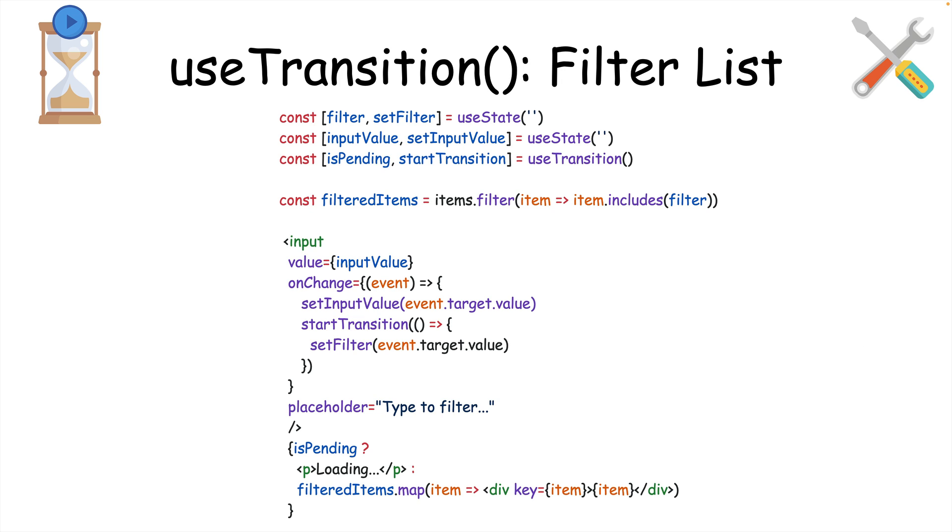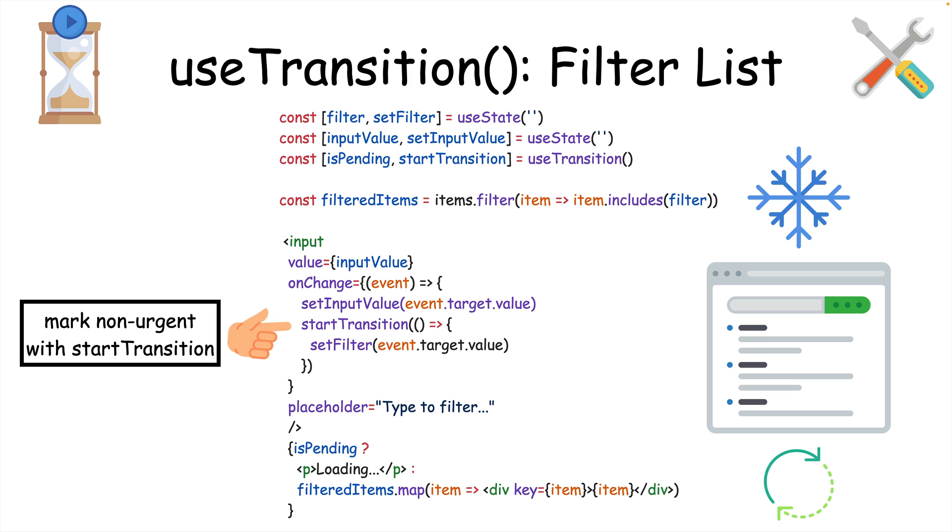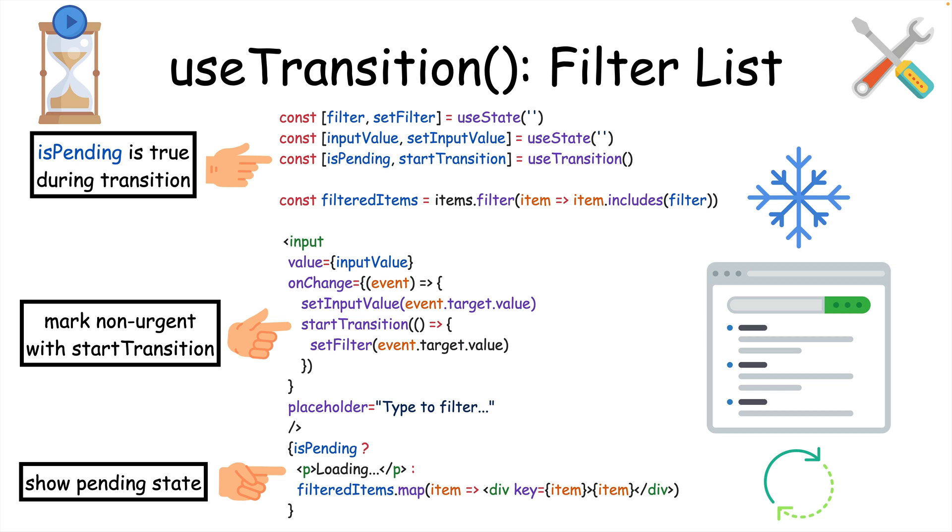A great use case for useTransition is filtering a list based on user input. Typing into the input might cause the UI to freeze or be sluggish, because the app is trying to re-render the list after each keystroke. We can mark the filter state update as non-urgent with the startTransition function from useTransition. useTransition also gives us an isPending boolean value to tell us when the transition is pending, allowing us to show a loading state to the user until the state update finishes.